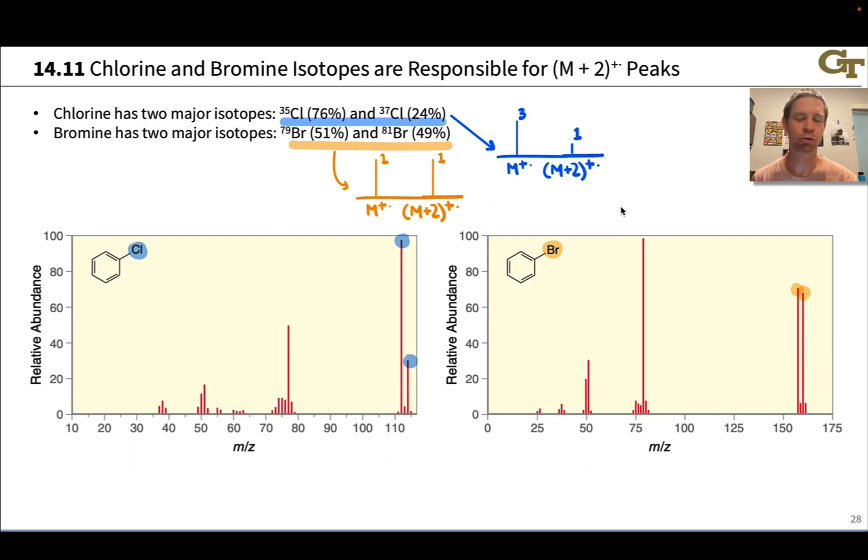We're going to stop there with bromine and chlorine, although you can imagine if we have multiple chlorines or multiple bromines in the compound, the statistics start getting interesting. For example, you start seeing a one to two to one ratio of M, M+2, and M+4 if you've got multiple bromines in the sample. We're not going to wade into that, but that's something you may see in more advanced mass spec courses.